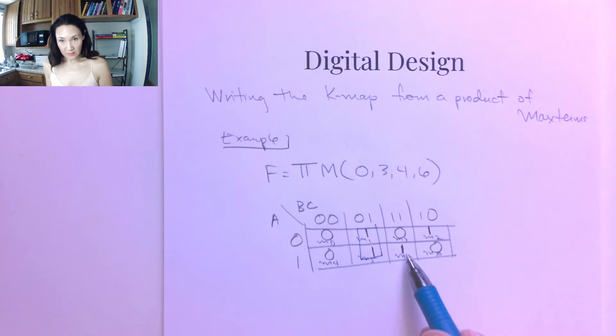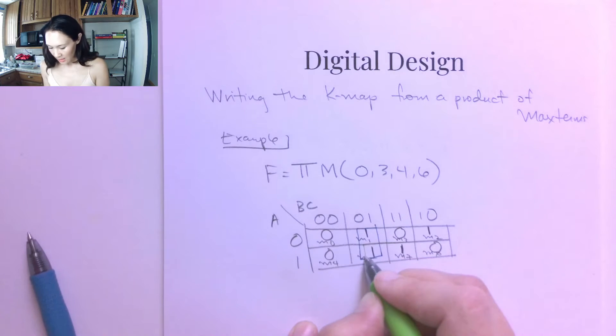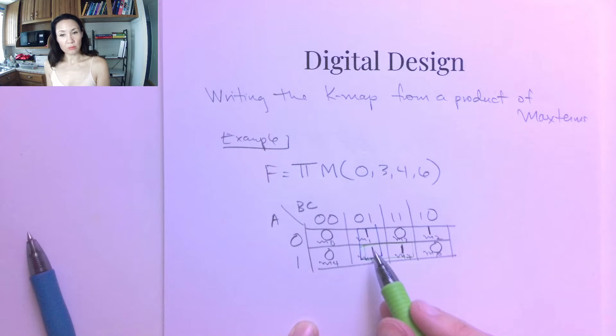And then we have this 1 here. We can group this with this 1. And we always want to do that, even though this 1 is already in the blue group, we want to go ahead and group this 1 with another 1, because the grouping is what's going to give us the simplification.